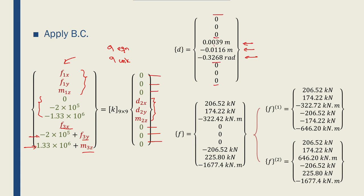These are the displacements of node 2 in the x and y directions and the rotation of node 2 about the z-axis. Using those values, we can find F1x, F1y, and M1z — the reaction forces at node 1 — and then the reaction forces at node 3 as well.